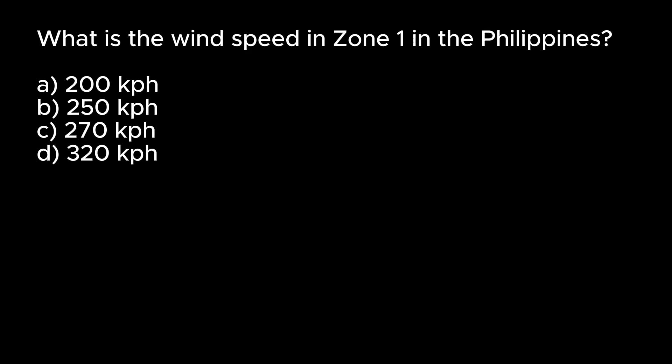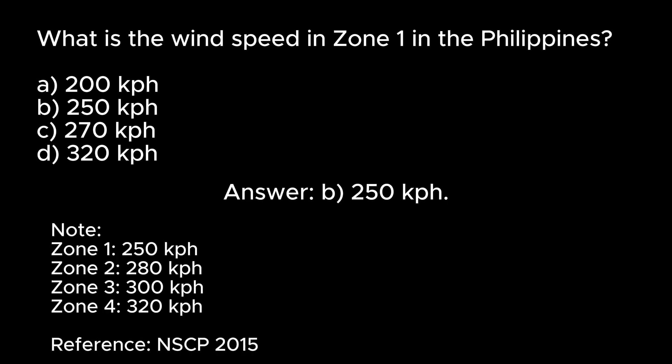What is the wind speed in Zone 1 in the Philippines? A. 200 km/h. B. 250 km/h. C. 270 km/h. D. 320 km/h. Answer: B. 250 km/h. Note — Zone 1: 250 km/h, Zone 2: 280 km/h, Zone 3: 300 km/h, Zone 4: 320 km/h.